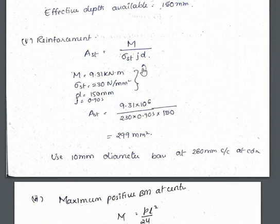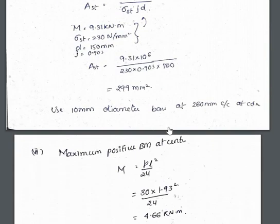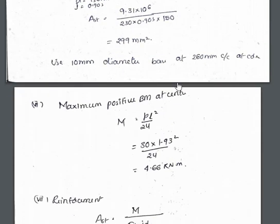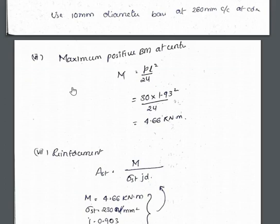The effective depth available is 150 mm, as calculated initially. The reinforcement is found using AST = M / (sigma_st × j × d), where sigma_st is the permissible stress assumed as 230 N/mm². After substituting all values, use 10 mm diameter bars at 260 mm center-to-center. At the corners, reinforcement is provided horizontally.